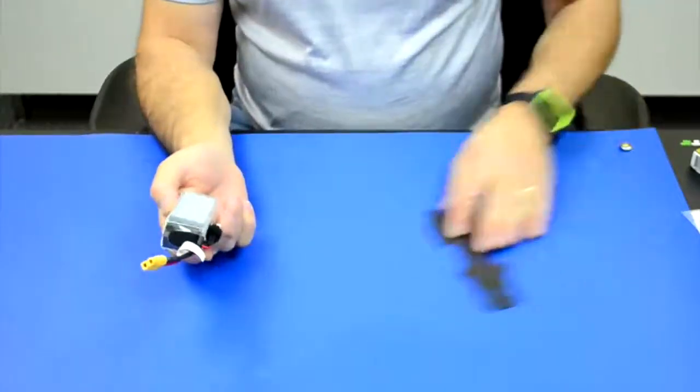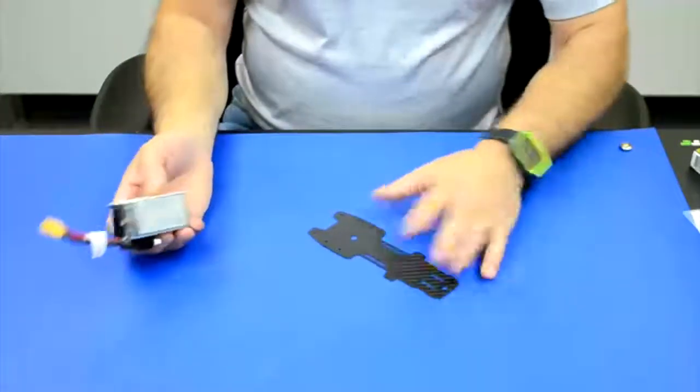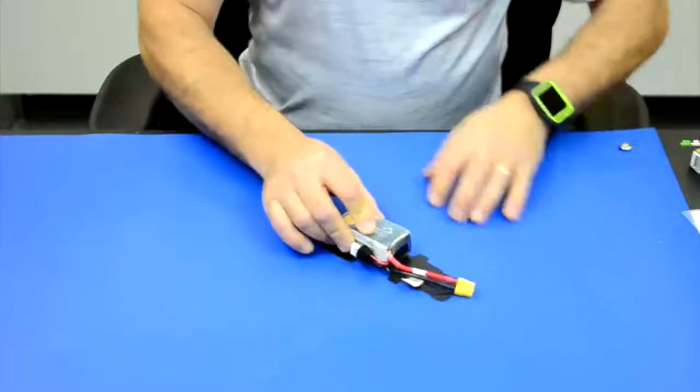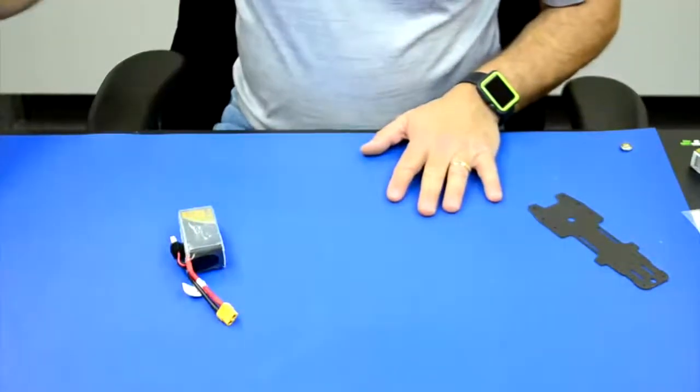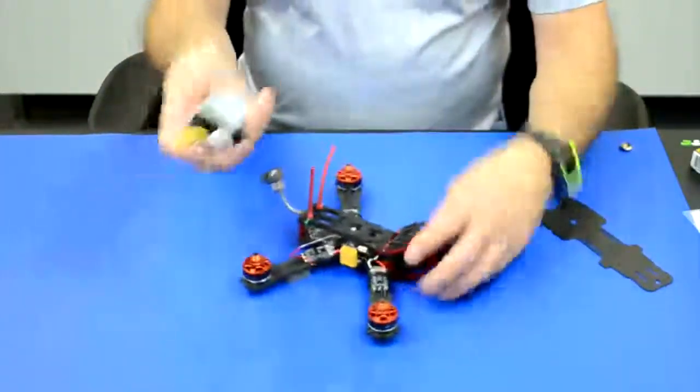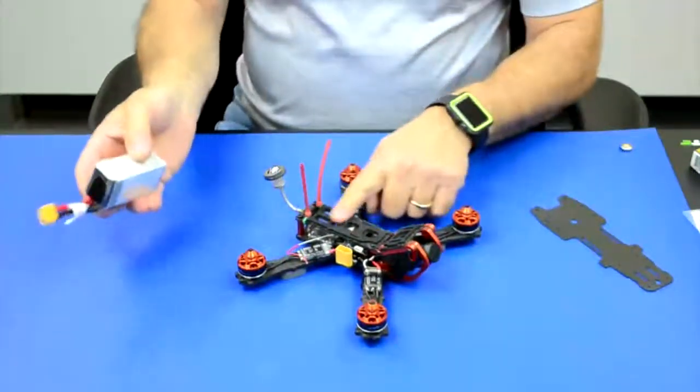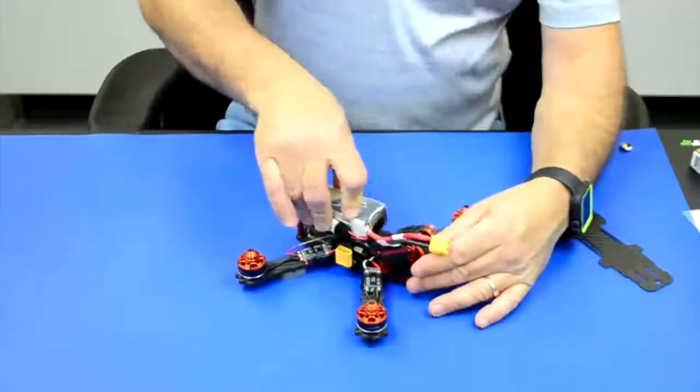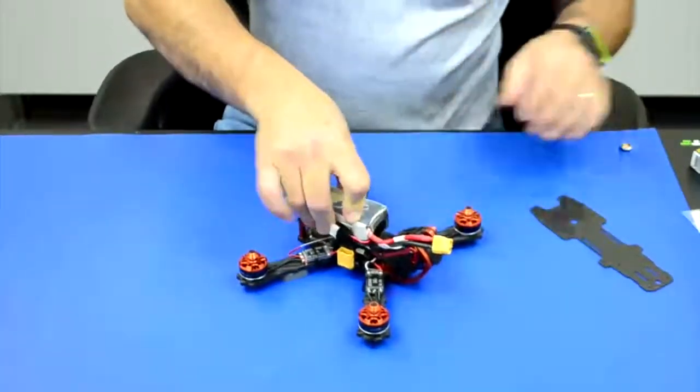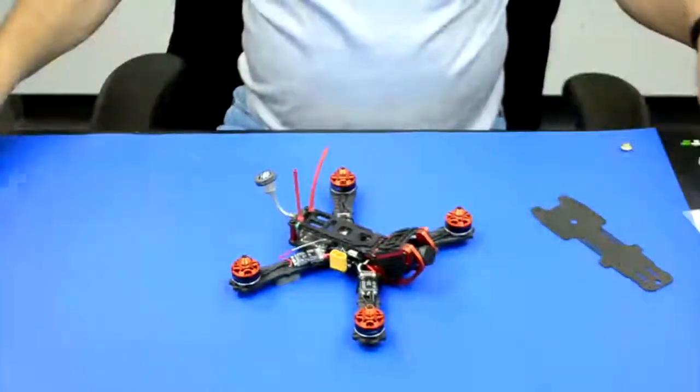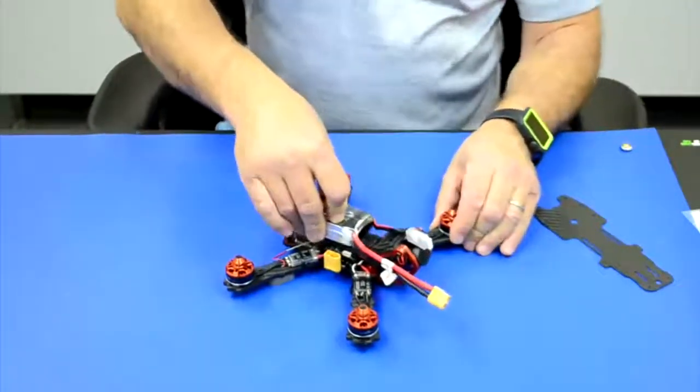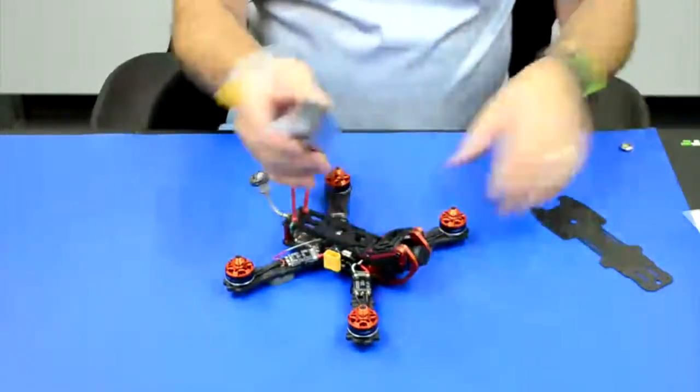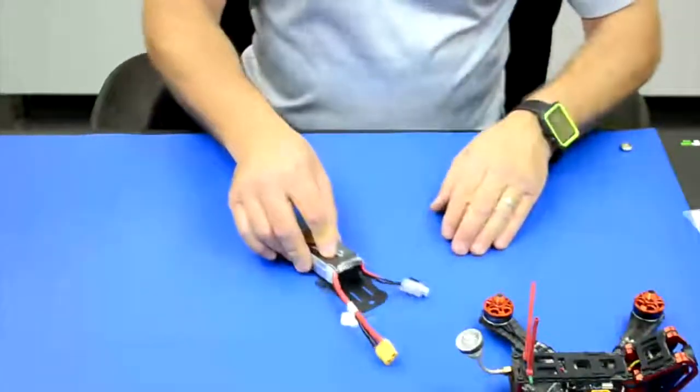We're going to show it on different surfaces. Carbon fiber, this rubber material here. This drone here has some foam. You can see that a regular battery will slide. I know you have to have a strap on it but you'll see the difference between the two.